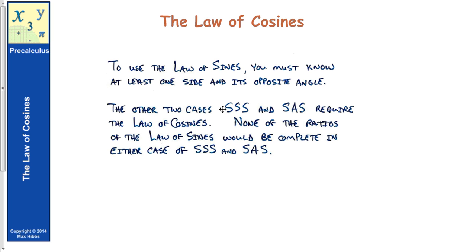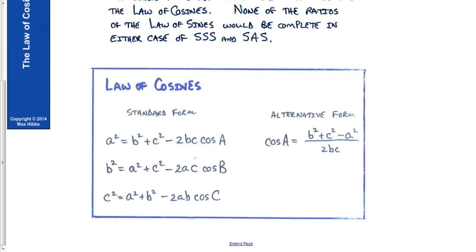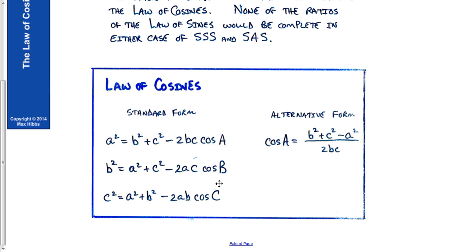The law of sines doesn't work in either of those cases, so enter the law of cosines. There are actually three different forms of the law of cosines, but it's set up so you're trying to find a side when you know two sides and the angle between them. If you know angle A and sides B and C, you use one form; if you know angle B and sides A and C, you use another, and so on.